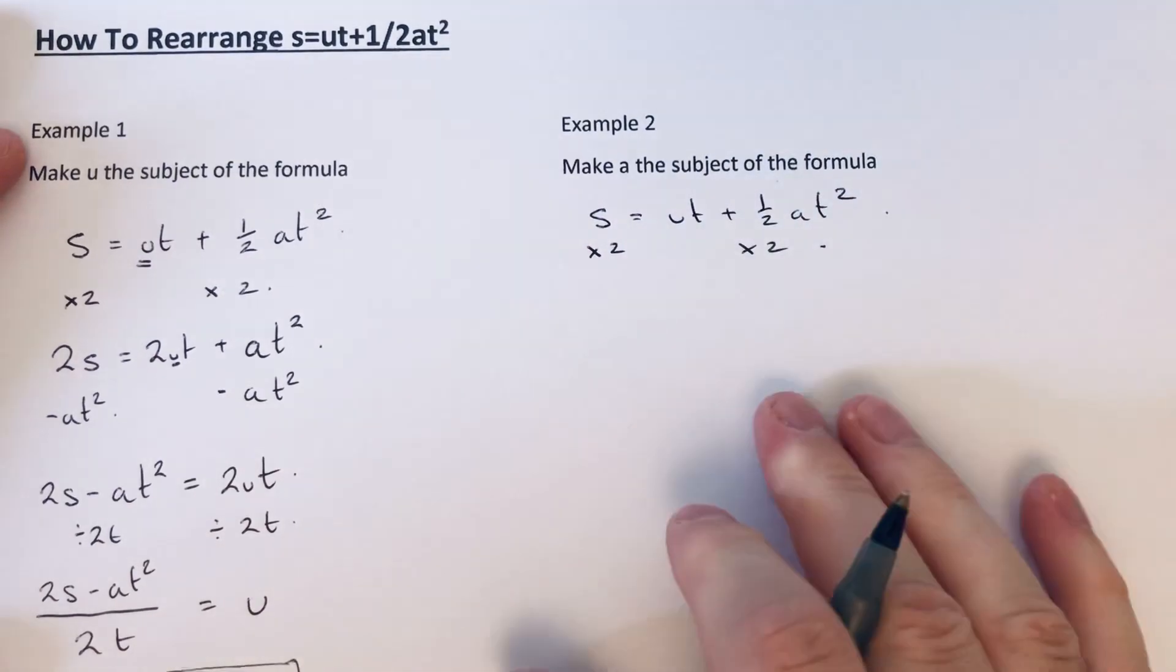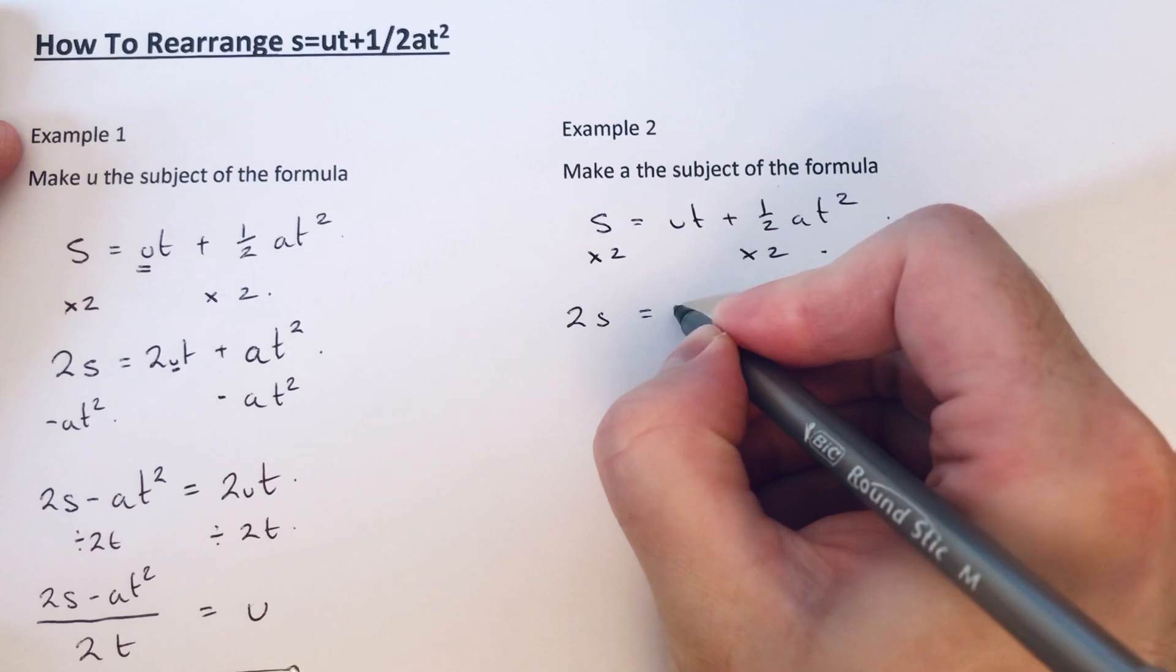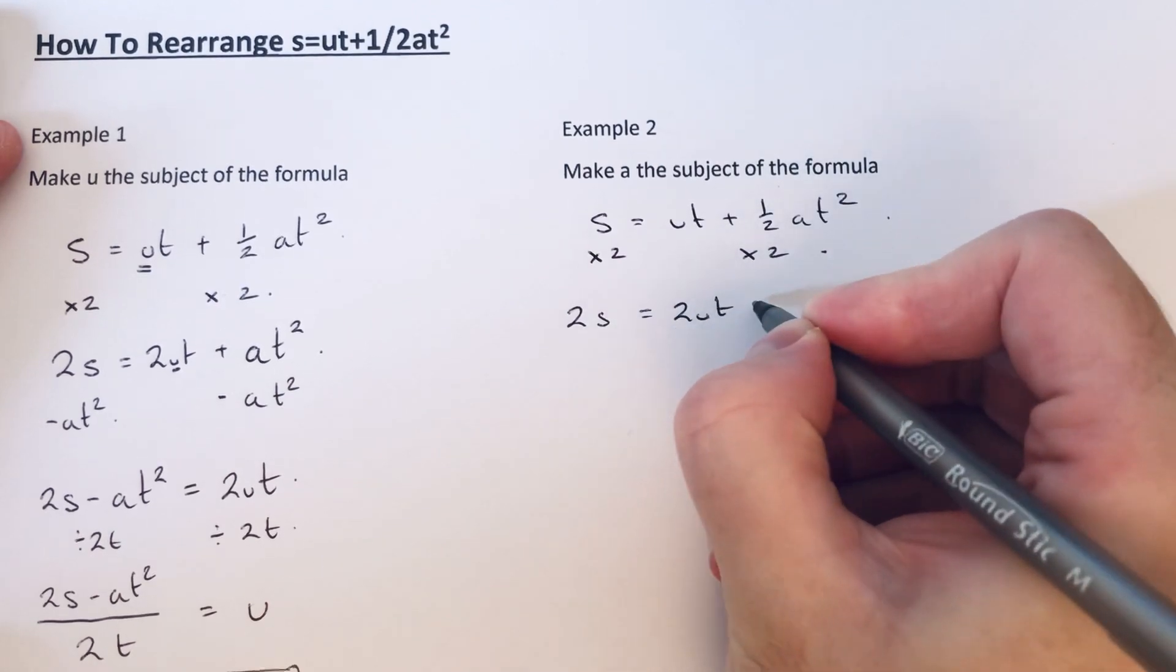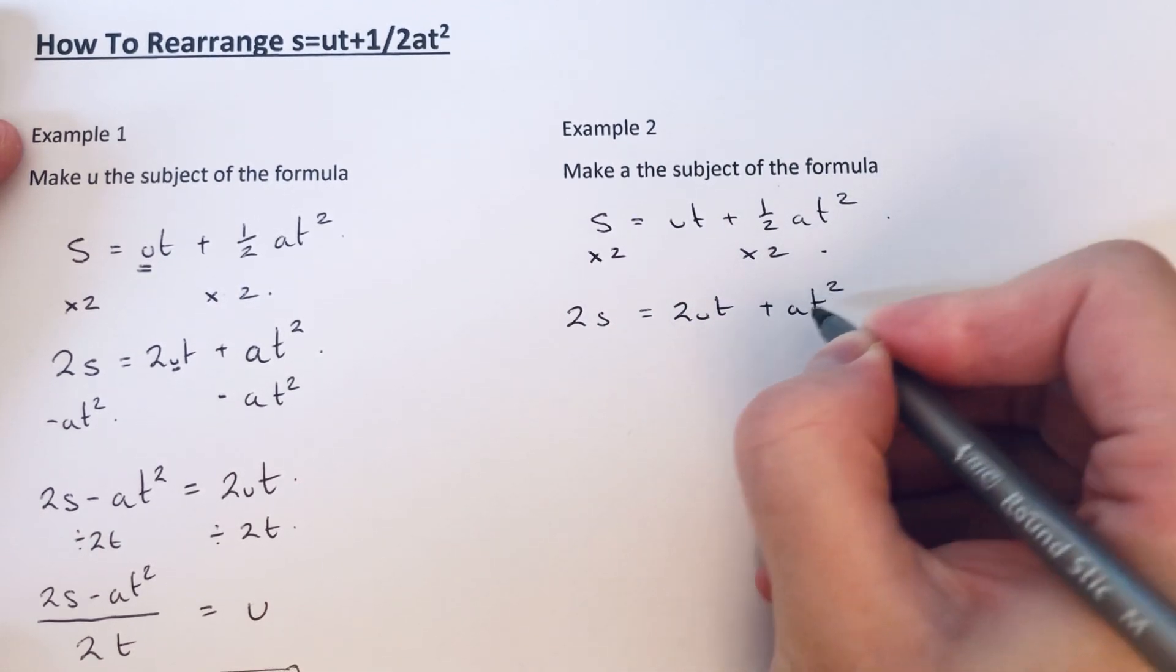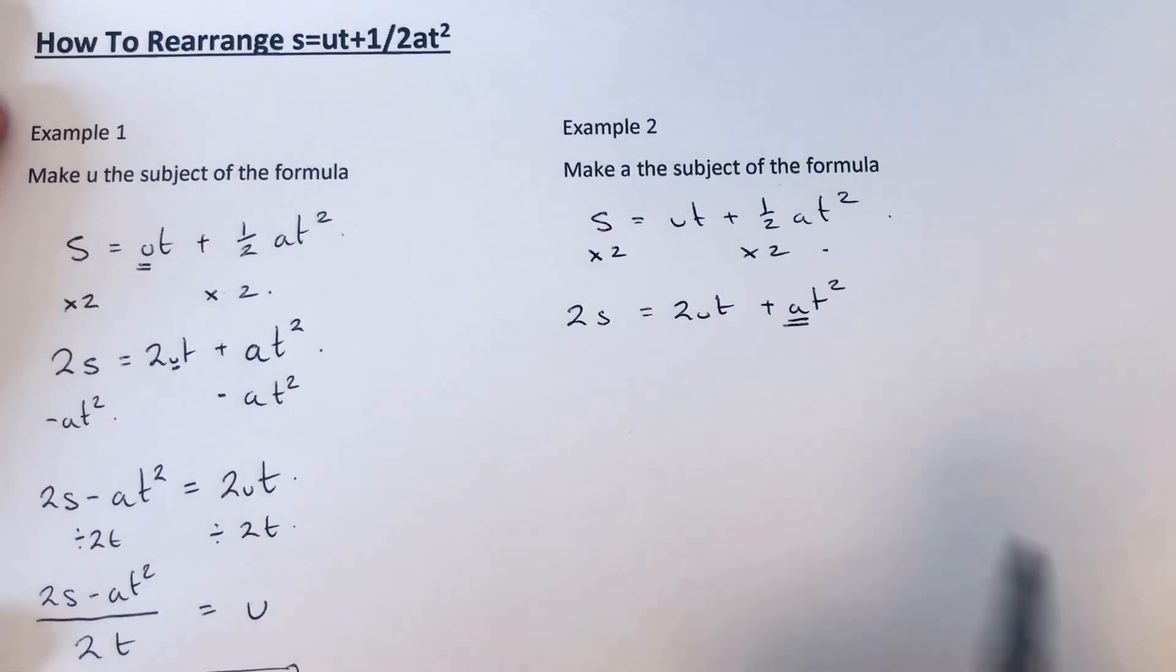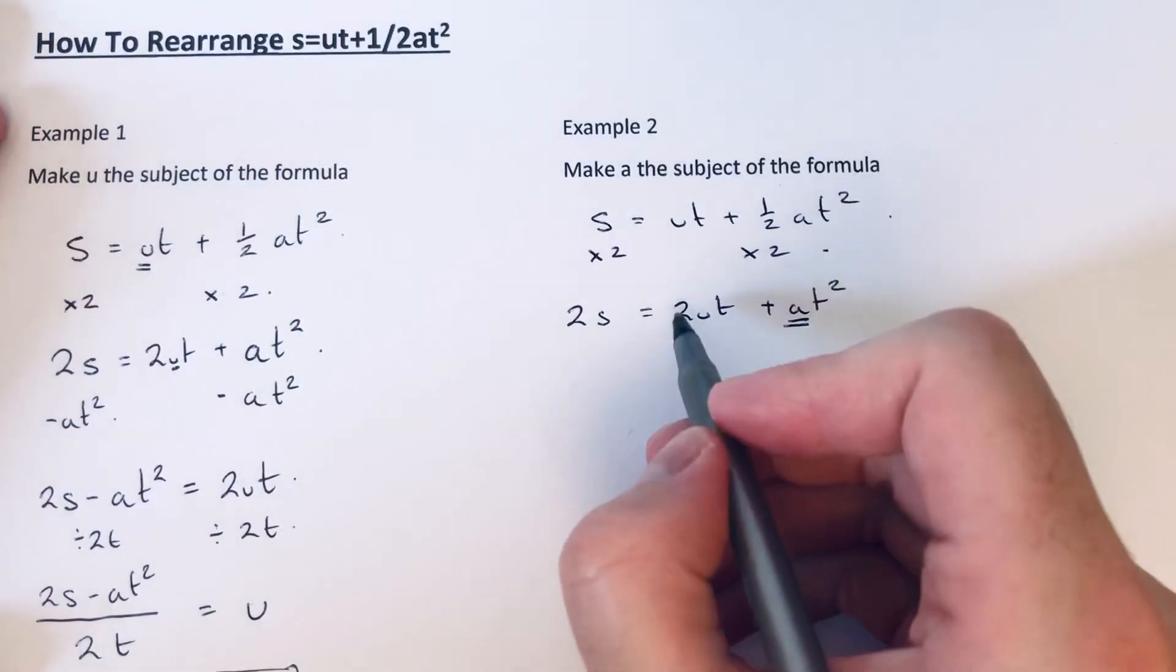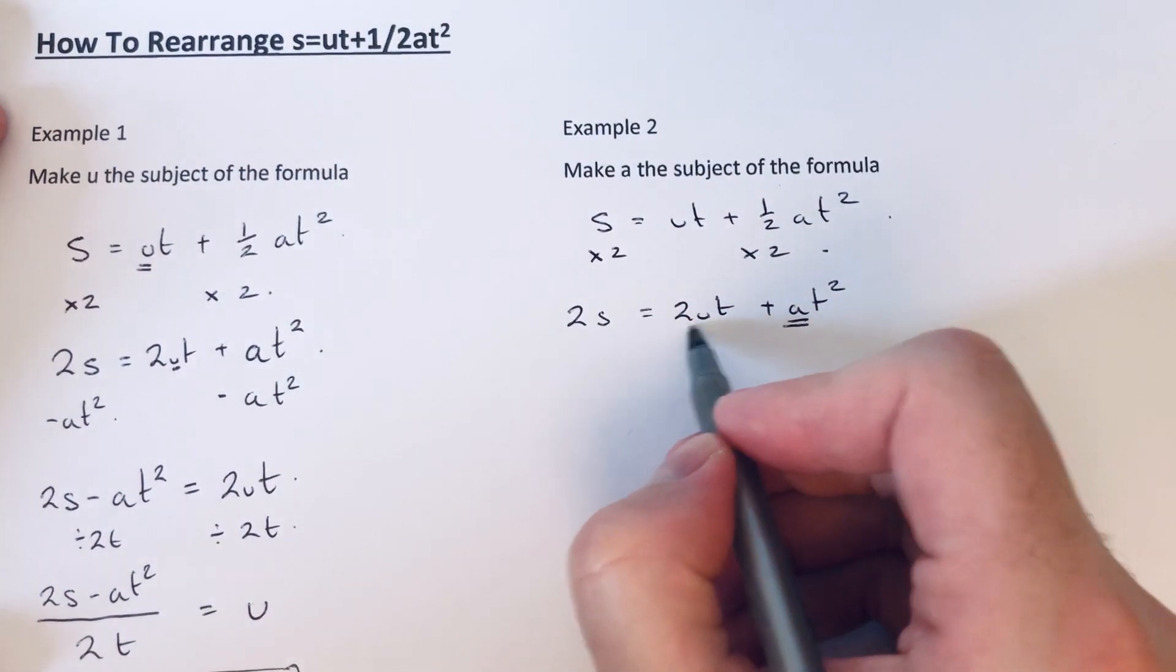So that will give me 2s equals 2ut plus at squared. So we're making a the subject this time. So a is being multiplied by t squared and then we're adding on 2ut.